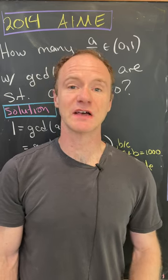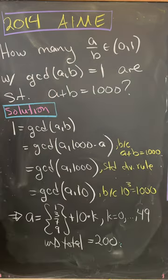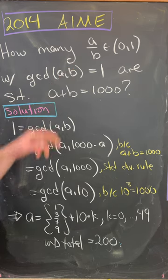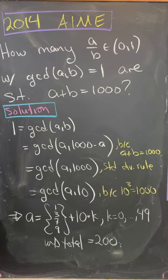Here's a nice quick number theory problem from the 2014 AMC. Our goal is to find how many rational numbers between 0 and 1, where the GCD of the numerator and denominator is 1, have the property that A plus B is equal to 1,000.